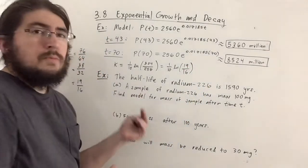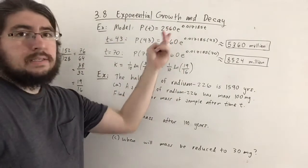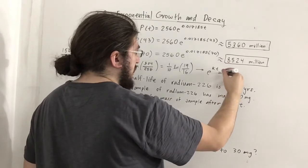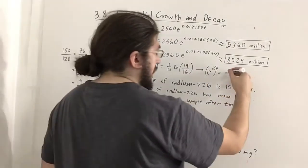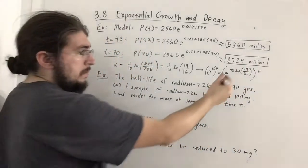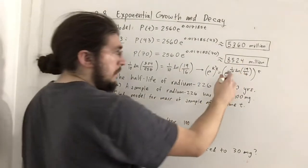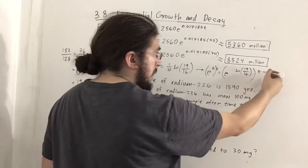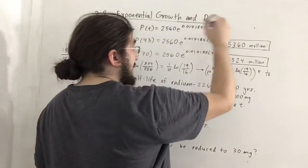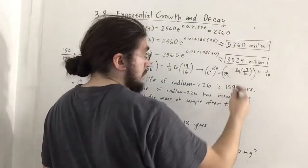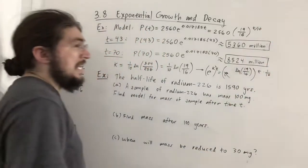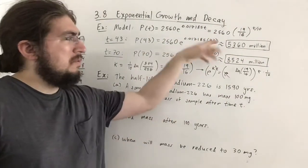Since our power involves ln and our base is e, some simplification is possible. e^(kt) = e^(k·T) can be written as e^((1/10)·ln(19/16)·T). The factor of 1/10 outside can be rewritten as an outer exponent. The e and ln cancel, giving us the exact model: P(t) = 2560·(19/16)^(T/10). This is more precise than approximating k, though we're estimating anyway.